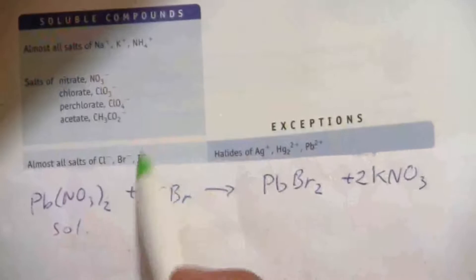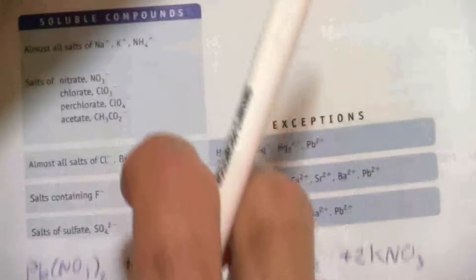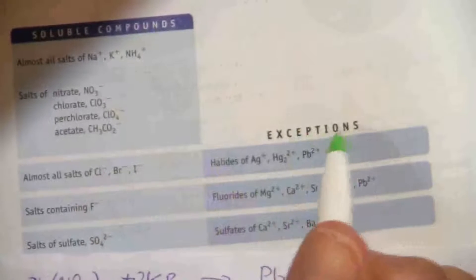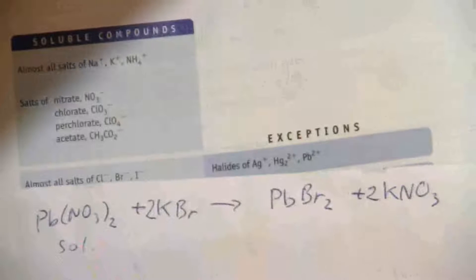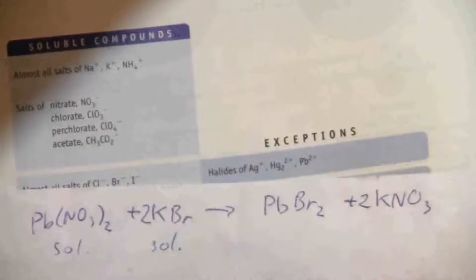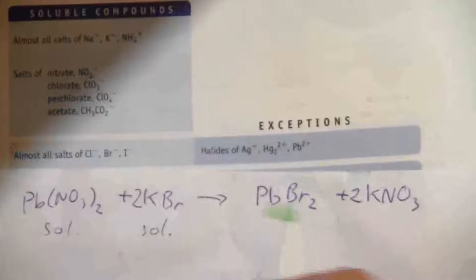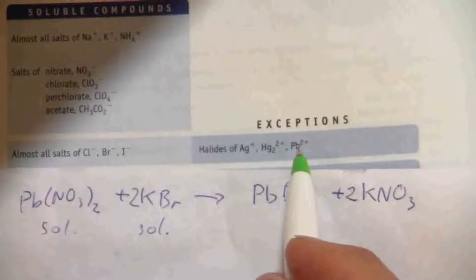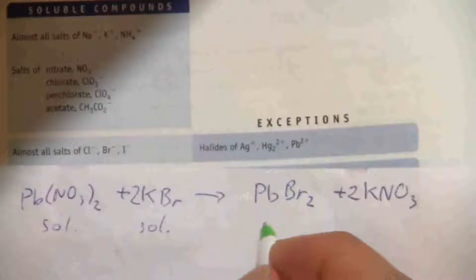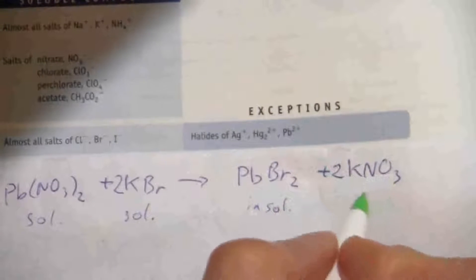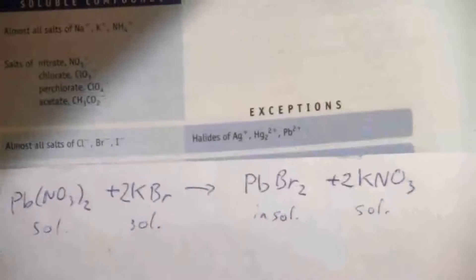And if we look at the bromide, we'll find it down here. Almost all salts of chloride, bromide, and iodide are also soluble. There are exceptions: silver, mercury, lead. Potassium is not one of those, so this is soluble. However, here's another bromide, and lead is an exception there. So this one is insoluble. And then here again, nitrates and the potassium, those are soluble compounds.